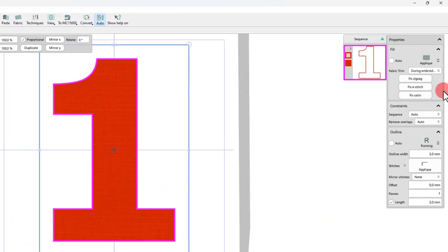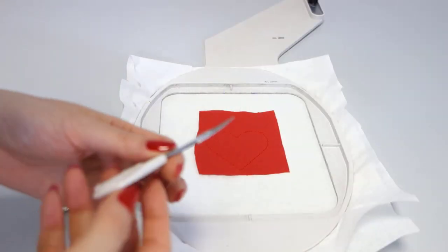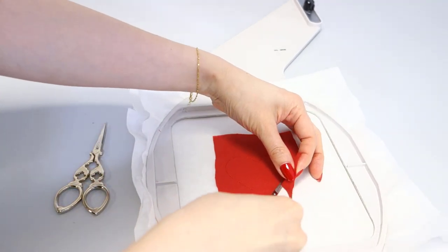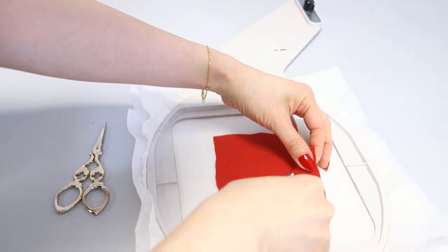A crucial aspect of applique is fabric trimming. In other words, the quality of the applique is strongly related to the way the excess fabric is trimmed off. Most often, the fabric is cut around with scissors after the holding stitches have been placed by the machine.